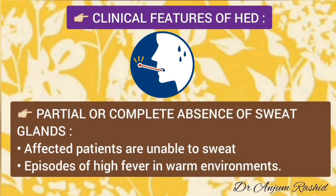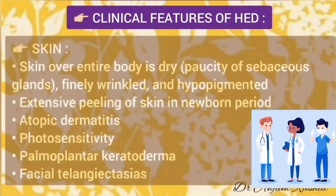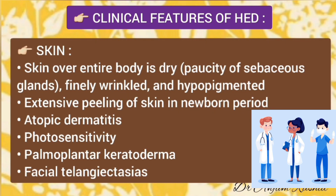There is partial or complete absence of sweat glands. Affected patients are unable to sweat and experience episodes of high fever in warm environments. Skin over the entire body is dry, finely wrinkled, and hypopigmented. There is extensive peeling of the skin in the newborn period. Other dermatological features include atopic dermatitis, photosensitivity, palmoplantar keratoderma, and facial telangiectasias.